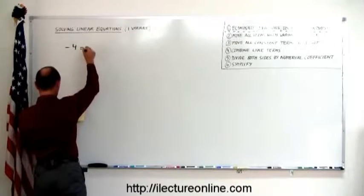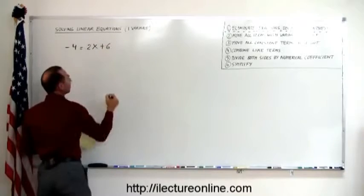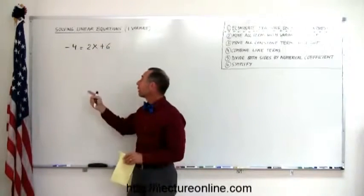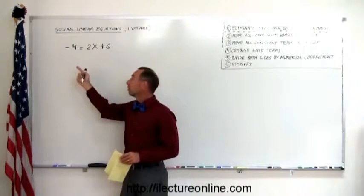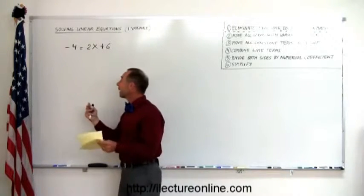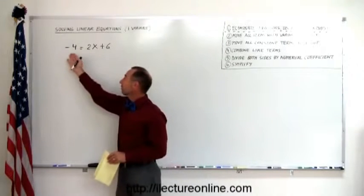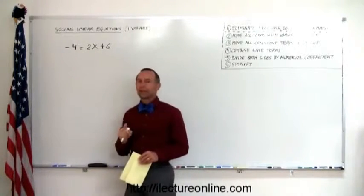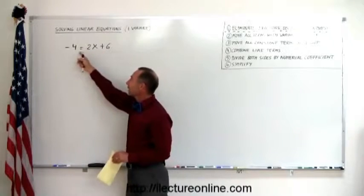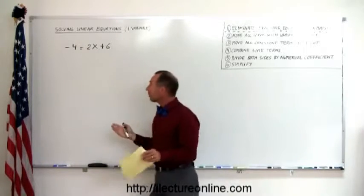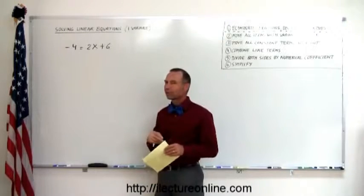x minus 4 equals 2x plus 6. It's a linear equation — linear because the variable is not written to a power more than 1. This is not x squared or x cubed, this is simply x, so that makes it linear. It's an equation because it has the left side, an equal sign, and the right side, and there's only one value for x that will make the left side equal to the right side. Just by looking at it you can't necessarily tell what that number is, so we're going to go through this very systematically.